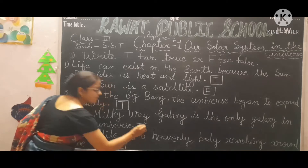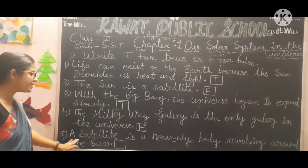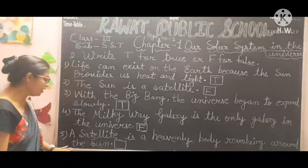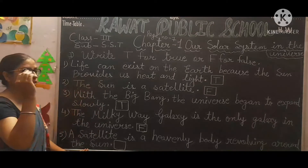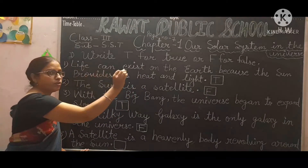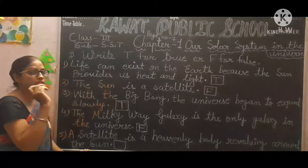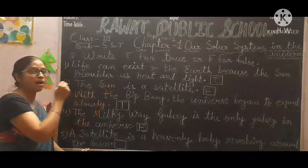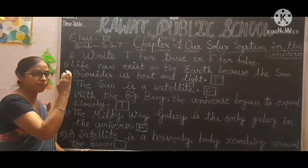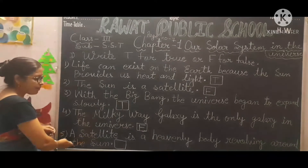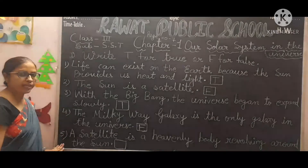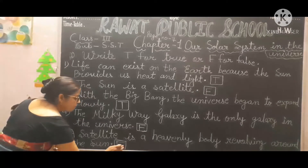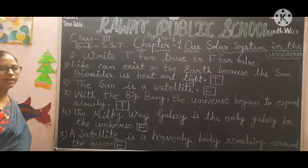Fifth statement: a satellite is a heavenly body revolving around the sun. Planets revolve around the sun, not satellites. That means it is false. So you will write here: false.